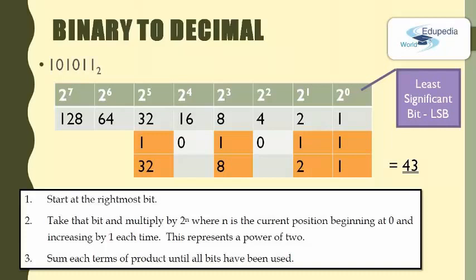N equals 0 to the positional length of the given number. In the second row we show the value of the first row: 2 to the power of 0 is 1, 2 to the power of 1 is 2, 2 to the power of 2 is 4, and so on. In the third row we show the given number 1 0 1 0 1 1. In the fourth row it is the multiplication of the second and third rows: 1×1=1, 2×1=2, 4×0=0, 8×1=8, 16×0=0, 32×1=32. Then we sum each product until all bits have been used.